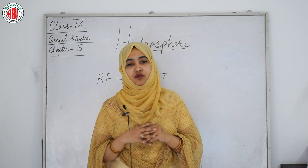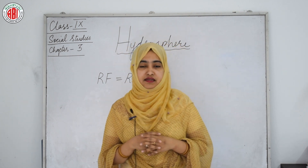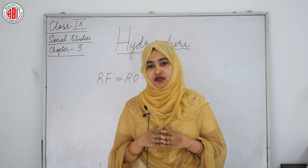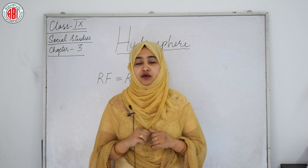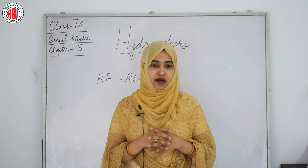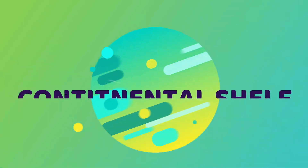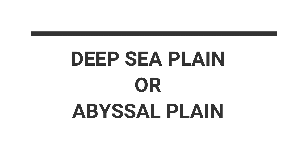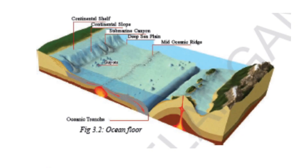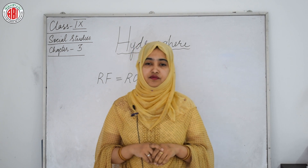The ocean basins are in many ways similar to the land surface — there are submarine ridges, plateaus, canyons, and terraces formed within the ocean. The ocean floor is divided into four parts: continental shelf, continental slope, deep sea plain or abyssal plain, and oceanic dips or trenches. You can see a picture of the ocean floor for a better understanding.